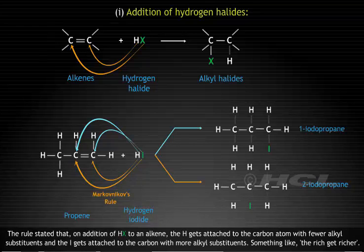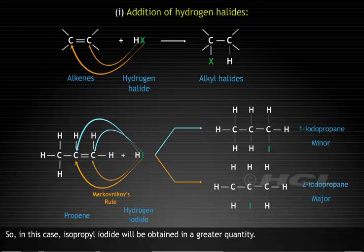The rule stated that on addition of HX to an alkene, the H gets attached to the carbon atom with fewer alkyl substitutes, and the I gets attached to the carbon with more alkyl substitutes. Something like the rich get richer. So, in this case, isopropyl iodide will be obtained in a greater quantity.